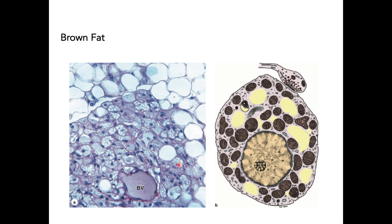The brown adipocyte appears bubbly because there are many lipid droplets in the cytoplasm. Even after dissolution during processing, the cytoplasm retains a bubbly appearance. The diagram of a single multilocular adipocyte shows a central nucleus, numerous lipid droplets (yellow), and abundant mitochondria (brown), which are important for electron flow and proton flow during non-shivering thermogenesis secondary to thermogenin or UCP1.